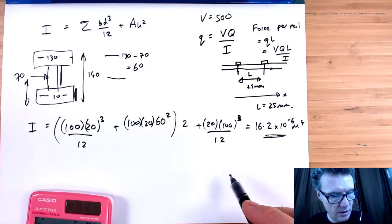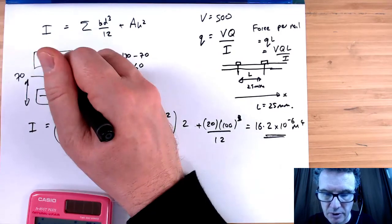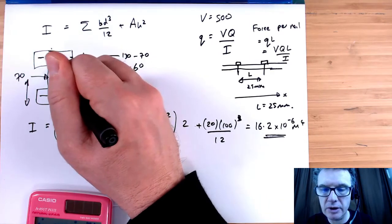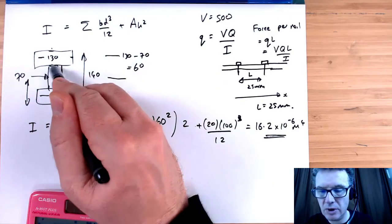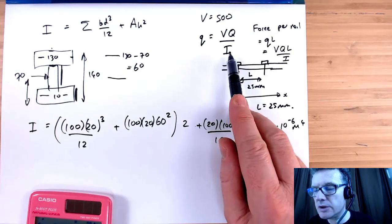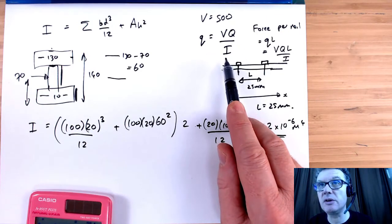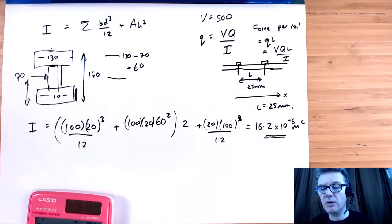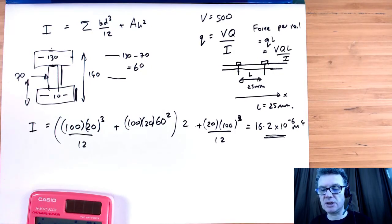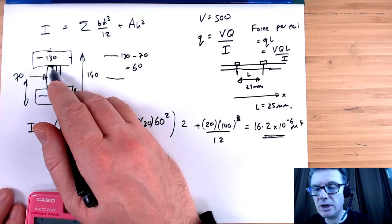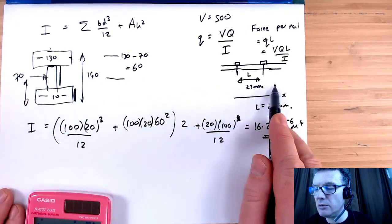Fortunately everything's nice and symmetric, so we've got this nail going all the way through. We're interested in finding the Q at this point here. We're not interested in terms of the width or anything like this, because it's the nail that's holding things together, not the width. Previously, the previous question was we imagined these things were being glued together, so I was interested in the width of surface contact area. This time we've just got a nail holding this section and this section together every 25 millimeters.